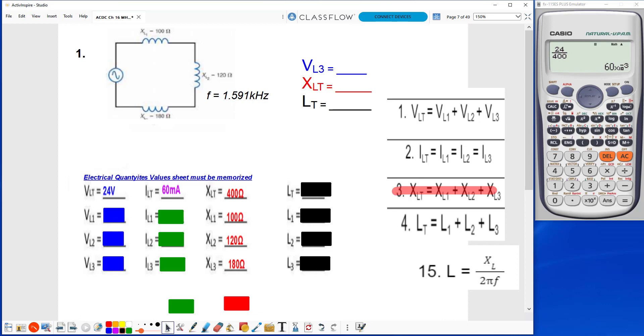I see here that current in a series circuit stays the same in an inductive circuit just like a resistive circuit. So I can go ahead and fill in all my current values.